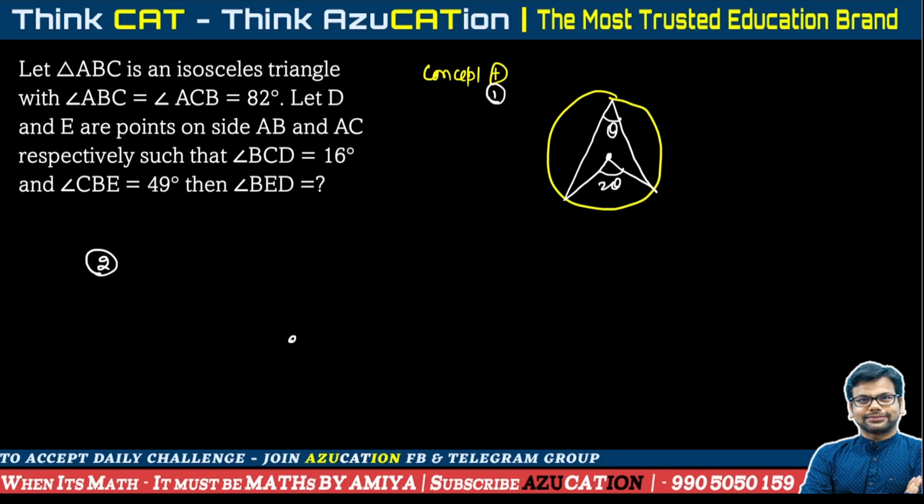Concept number two is an interesting concept. When we have a point O and three points in the space such that OP, OQ and OR are equidistant from the common point, if at least three points are equidistant, then we can draw a circle with the help of three points. And the common point is the center.